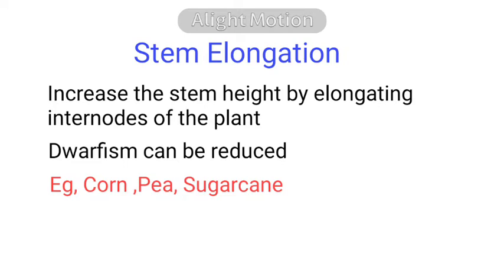In sugarcane, sugar is stored in the stem. All of you would have seen the stem of sugarcane. Elongating the stem in sugarcane gives more space for sugar to be stored, by which a greater amount of sugar is obtained.